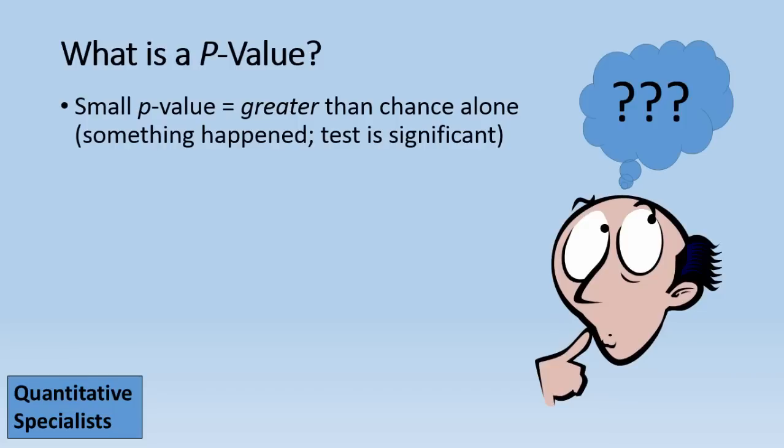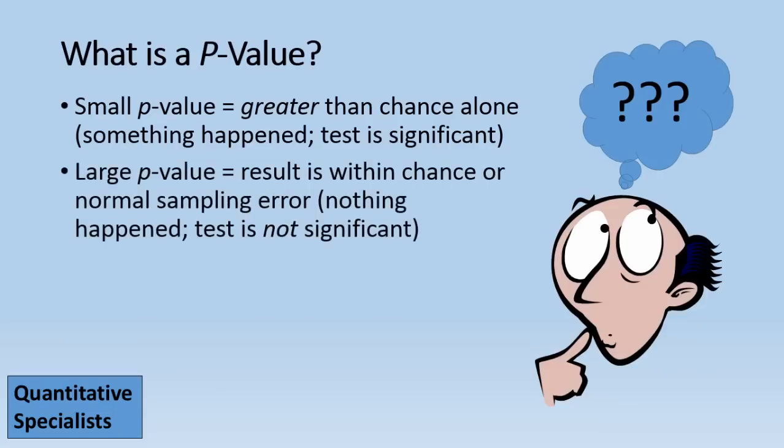A small p-value means that it is greater than chance alone. Something happened, the test is significant. Whereas a large p-value indicates that the result is within chance or normal sampling error. Or in other words, nothing happened, the test is not significant.